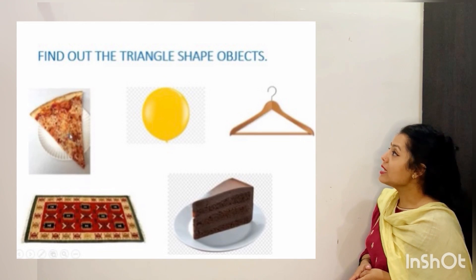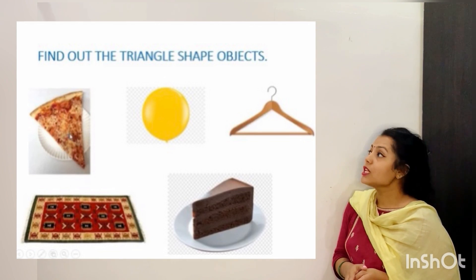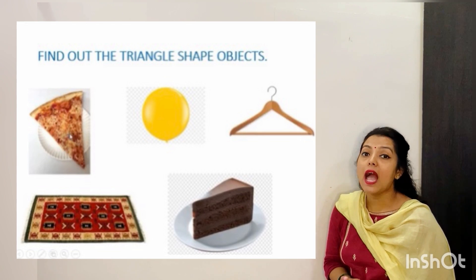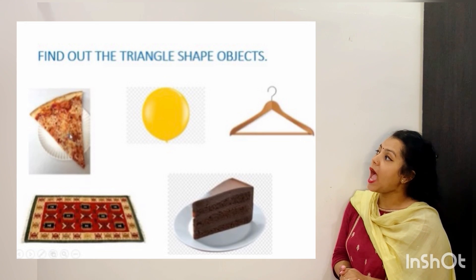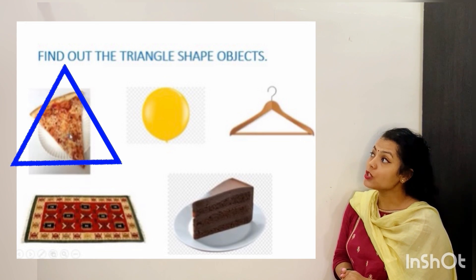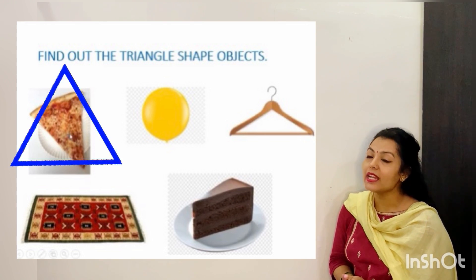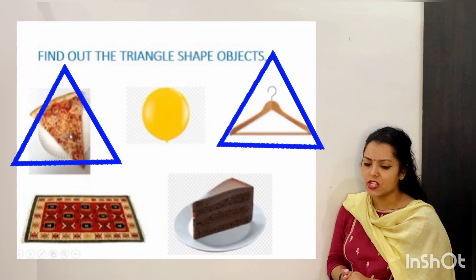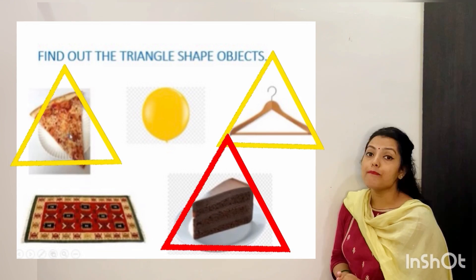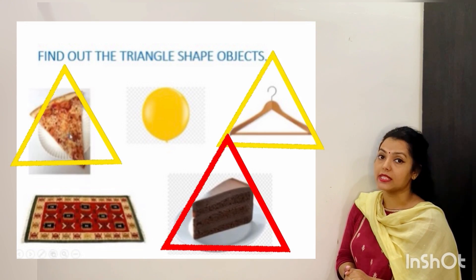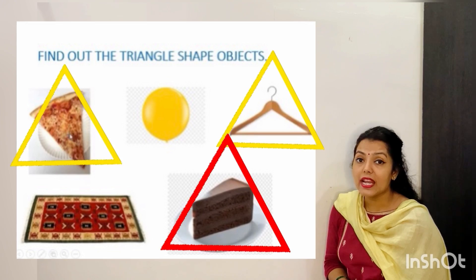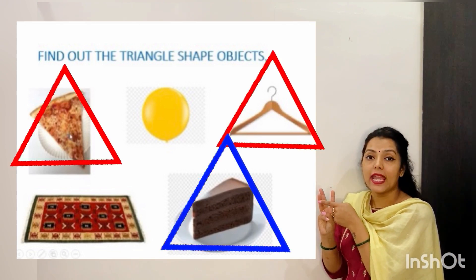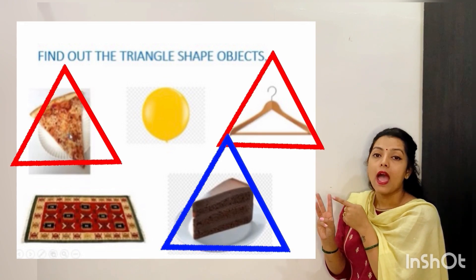Now here are some shapes. Can you guess which of these are triangle shape? Yes! Come let's guess it together. So we have a pizza slice over here — this is triangle in shape. Then we have a hanger — hanger is also triangle in shape. Then we have pastry or a cake slice — this is also triangle in shape. So we have three triangle shapes over here: the cake slice, the hanger and a pizza.